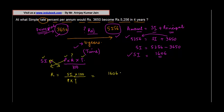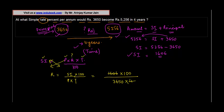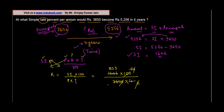Substituting the values: Rate = (1606 × 100) / (3650 × 4). Cancelling step by step — 4 gives 2 and 803, then 2 cancels to give 50, and simplifying 803 with 73 gives 11. So the rate of interest is equal to 11%.